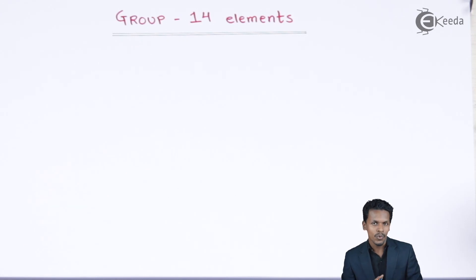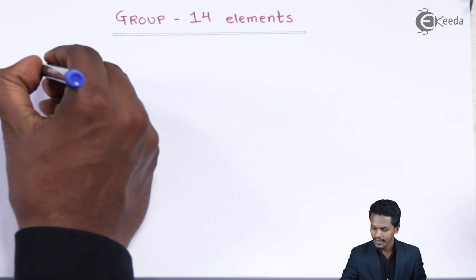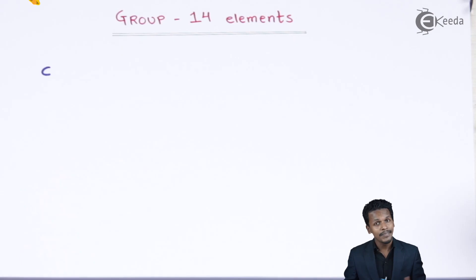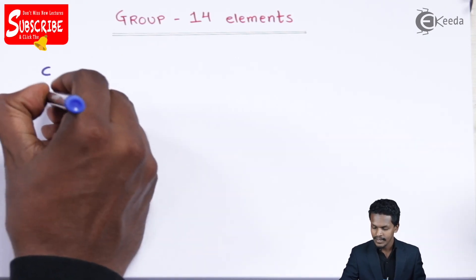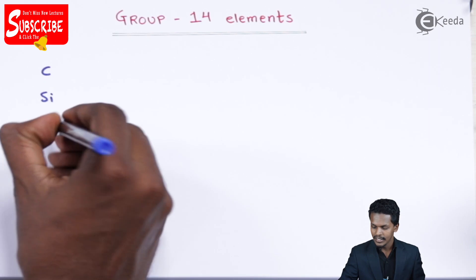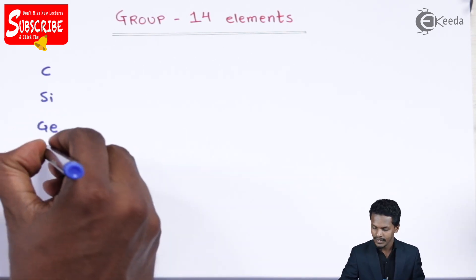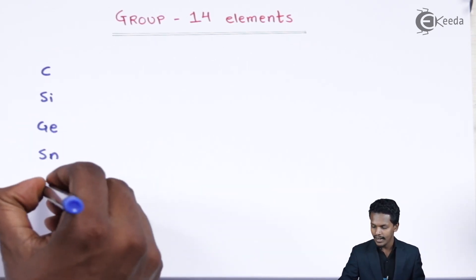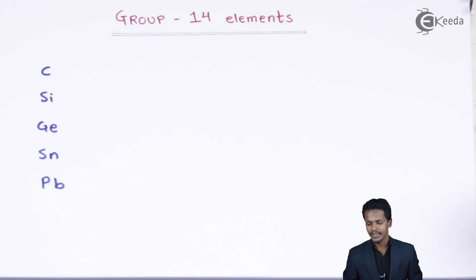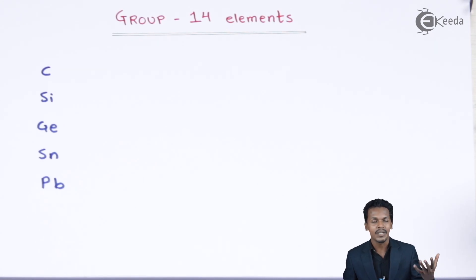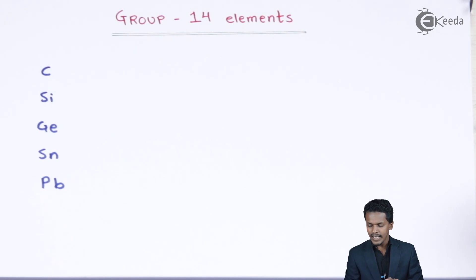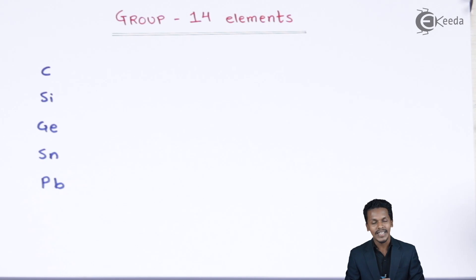The elements belonging to group 14 are carbon, silicon, germanium, tin, and lead. These are the symbols mentioned here. Tin is represented by Sn, which comes from its ancient name 'Stannum', and that is the reason for this symbolic representation.